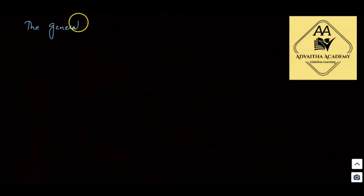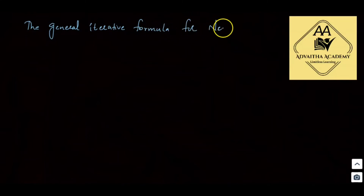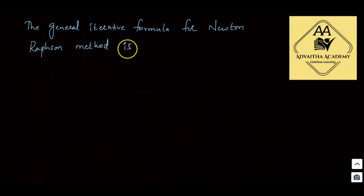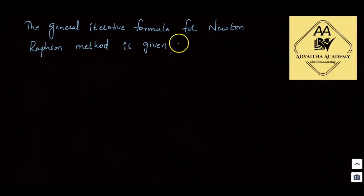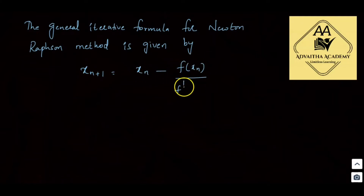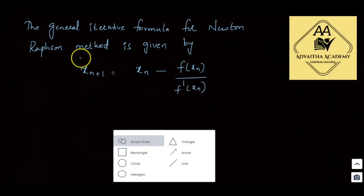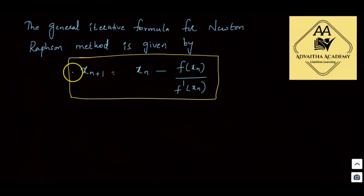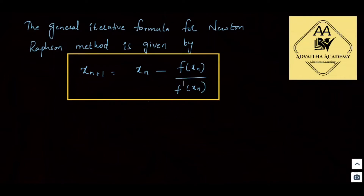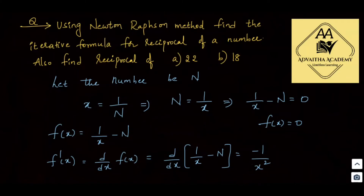The general iterative formula for Newton-Raphson method is given by: xn+1 = xn minus f(xn) divided by f'(xn). This is the general formula. Now by substituting f(xn) and f'(xn) into this general formula, we will get the iterative formula for the reciprocal of a number.